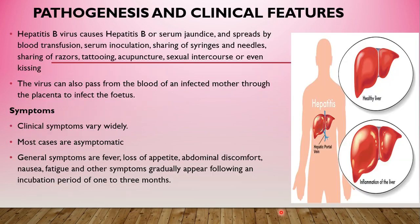The blood of carriers and patients is the most important source of infection. The virus is highly infectious — as little as 0.0001 ml of carrier sera can transmit the infection. Hepatitis B is spread by blood transfusion, serum inoculation, sharing of syringes and needles, sharing of razors, tattooing, acupuncture, sexual intercourse, or even kissing. The virus can also pass from an infected mother through the placenta to infect the fetus.